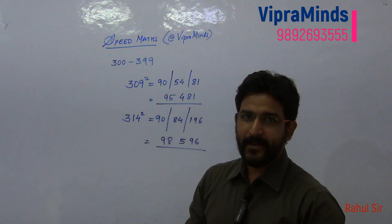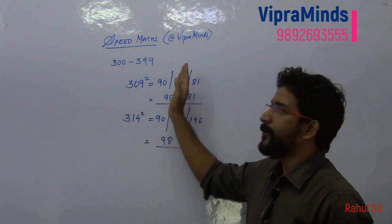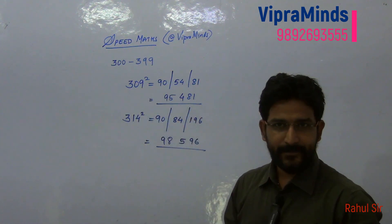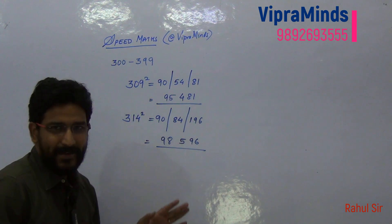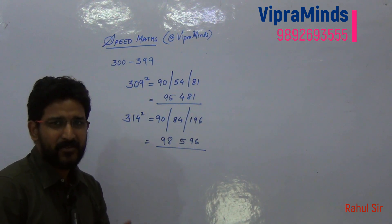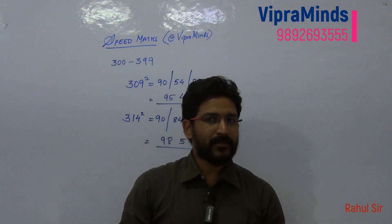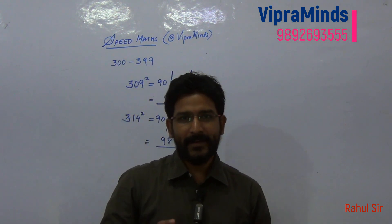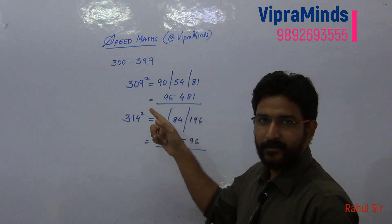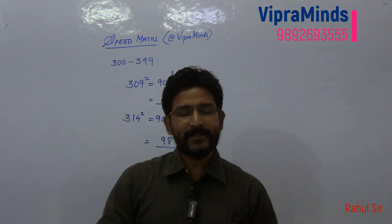So this is how you apply the trick for numbers between 300 to 399: write 90 in the first block, take 6 times the last two digits in the second block, and the square of the last two digits in the third block. If you know squares of two-digit numbers up to 30, you can easily calculate squares up to 330. Similarly, you can use a related approach for 400 to 499 following the same pattern. In the next video we are going to give the trick that you can apply for all three-digit numbers. Thank you.